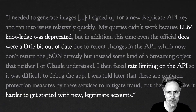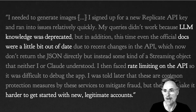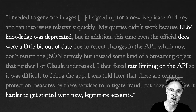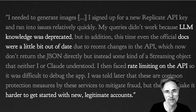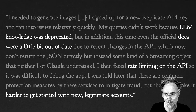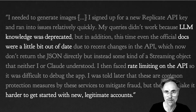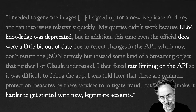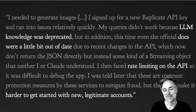Here's the part about Replicate: he jumped in, he created a new API key, the LLM knowledge was deprecated, our docs were out of date, he encountered rate limiting issues, and it was hard to get started with a legitimate account even though he was plunking down his credit card. So I want to dig into what happened here and some of the changes we're making at Replicate to help make this a better experience for vibe coders and regular coders in the future.